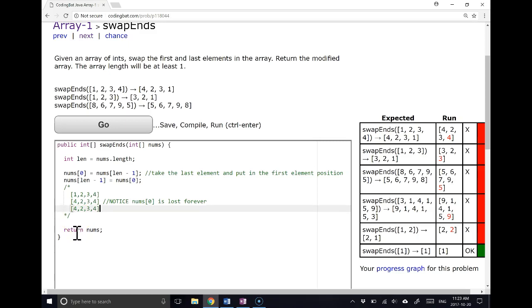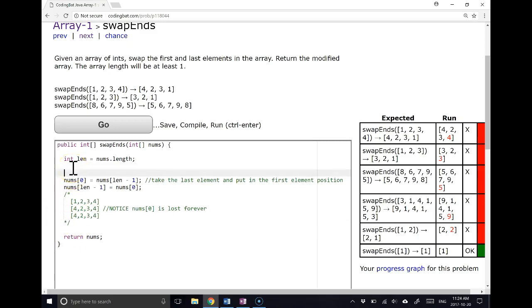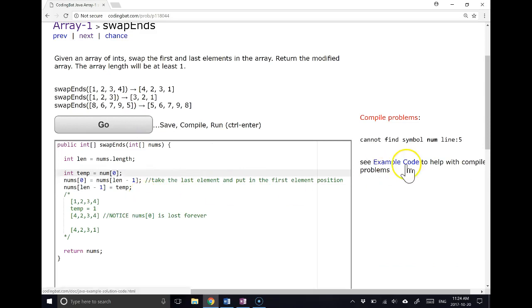So what do we need to do to solve this problem? We need to make a temp variable and first pull nums at 0 out. And by doing that, we've now stored that information. So the first thing I'm going to do is make this variable called temp, and that's going to equal 1. So now when I overwrite this 4, I can pull from temp the value to put back in this last position. So I'm going to come here, because nums at 0 has been overwritten, and put temp.